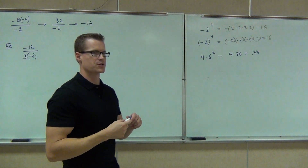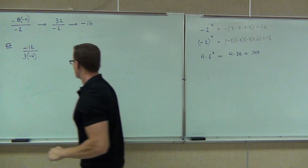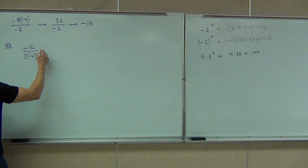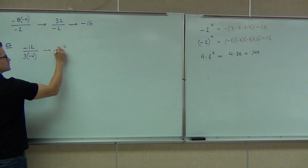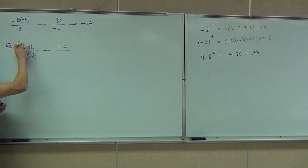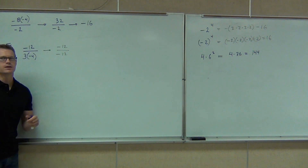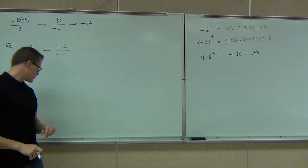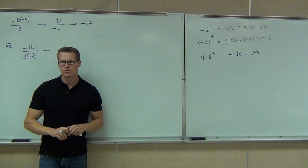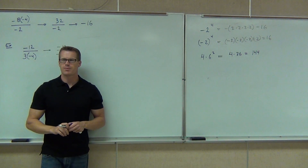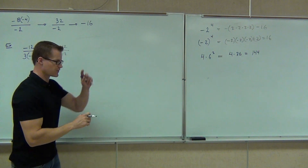Which part should we do first? The bottom — the denominator. How much do we get? Negative 12. So negative 12 stays in the numerator, and the denominator becomes negative 12. We have negative 12 over negative 12. How much is that? Positive 1 — two negatives make a positive. Very good.